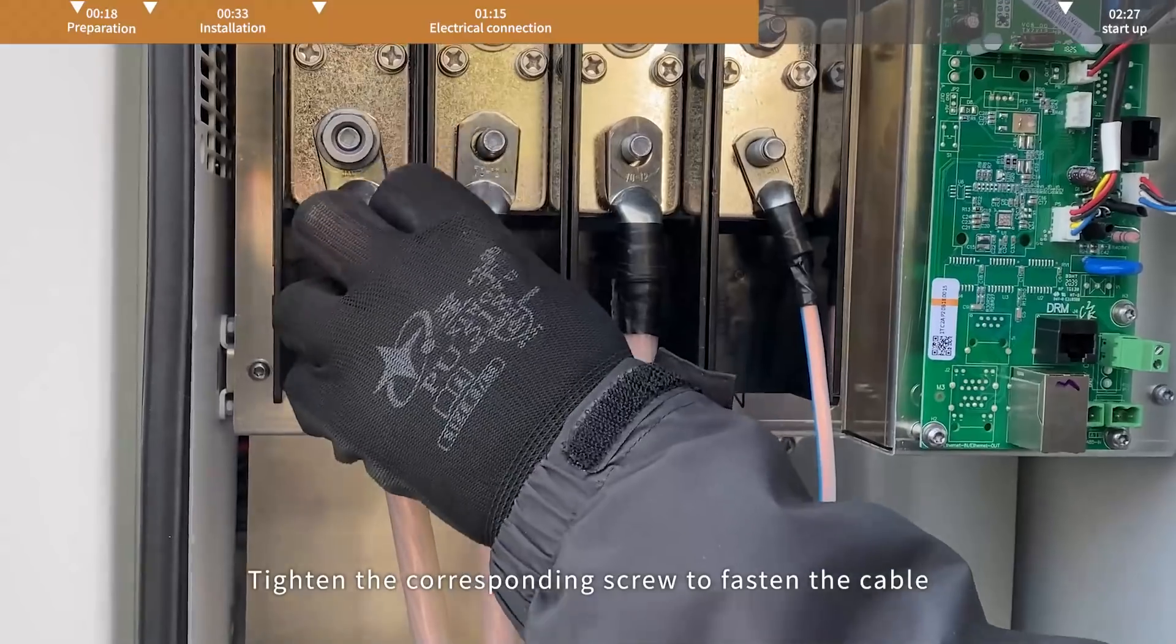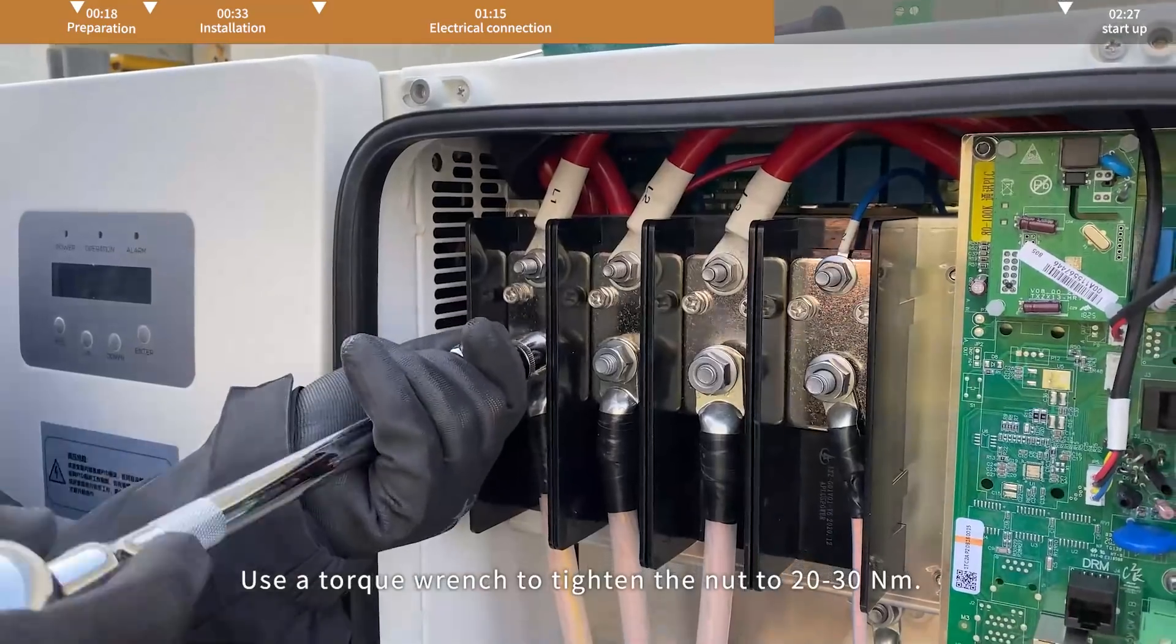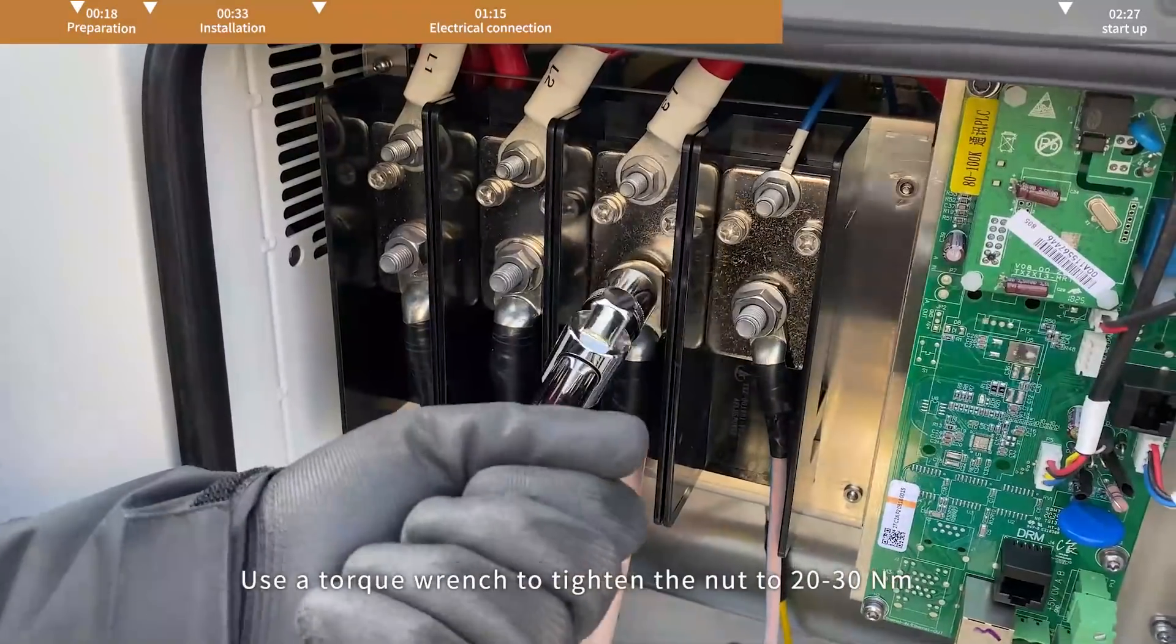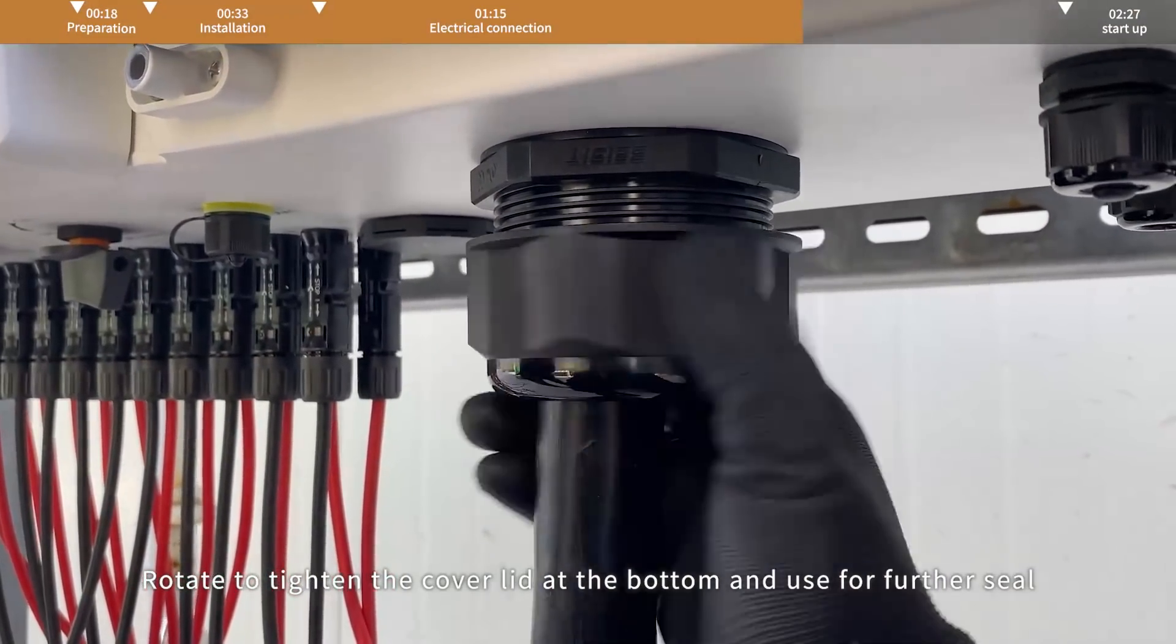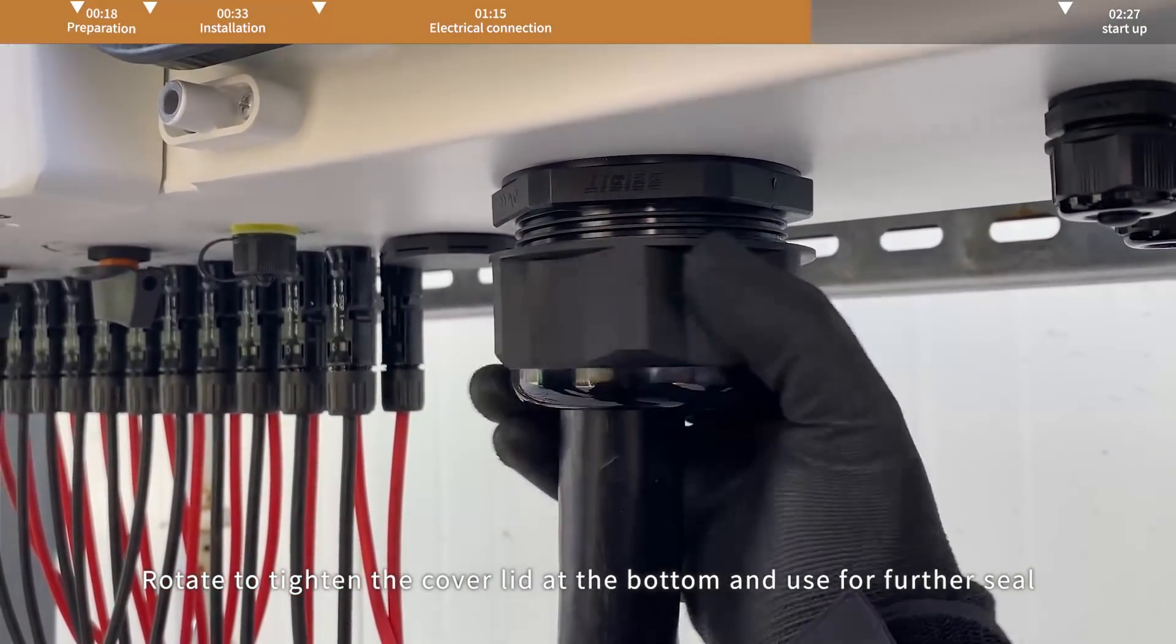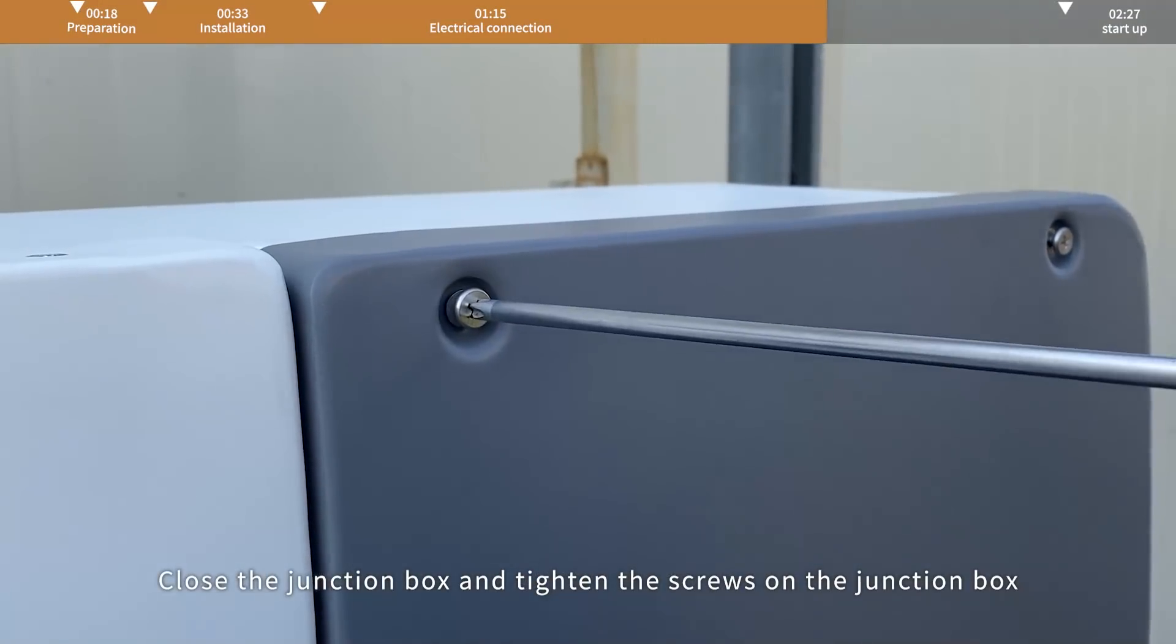Tighten the corresponding screw to fasten the cable. Use a torque wrench to tighten the nut to 20 to 30 Nm. Rotate to tighten the cover lid at the bottom for further seal. Close the junction box and tighten the screws on the junction box.